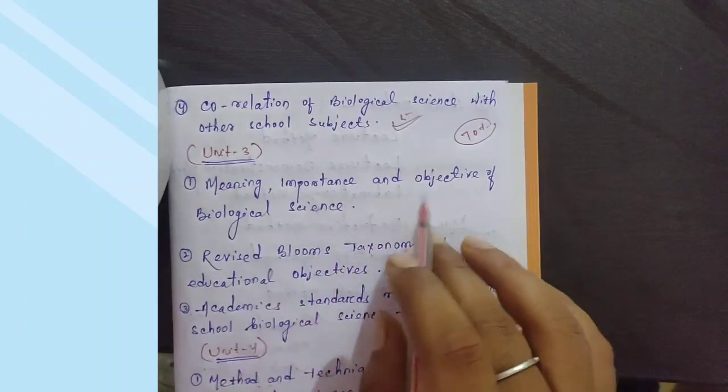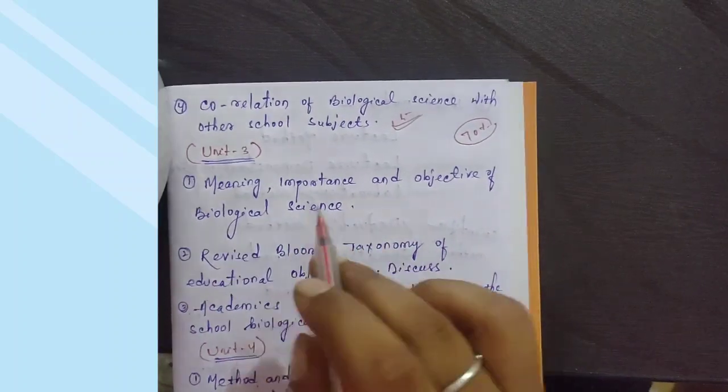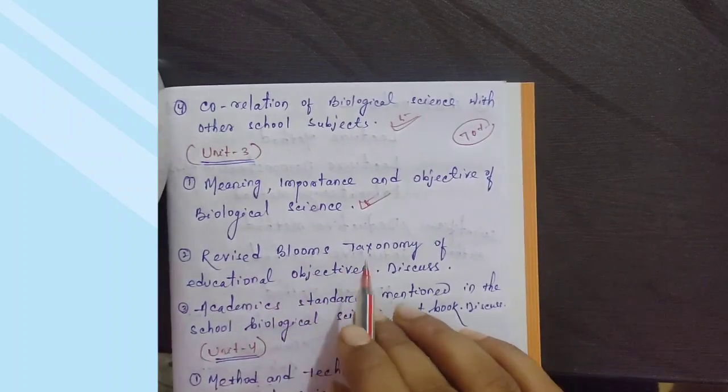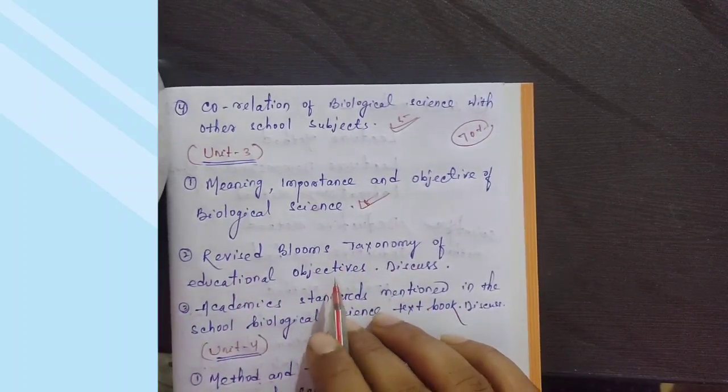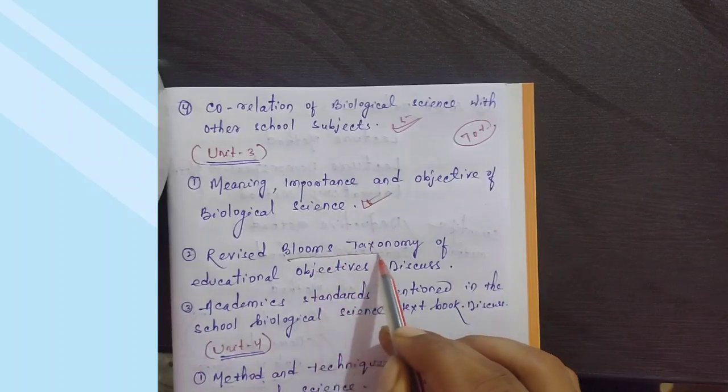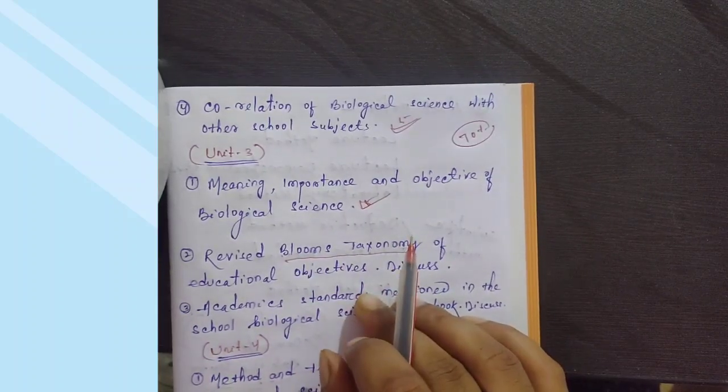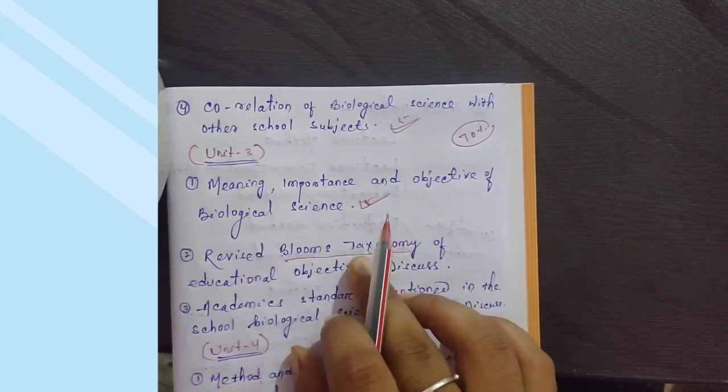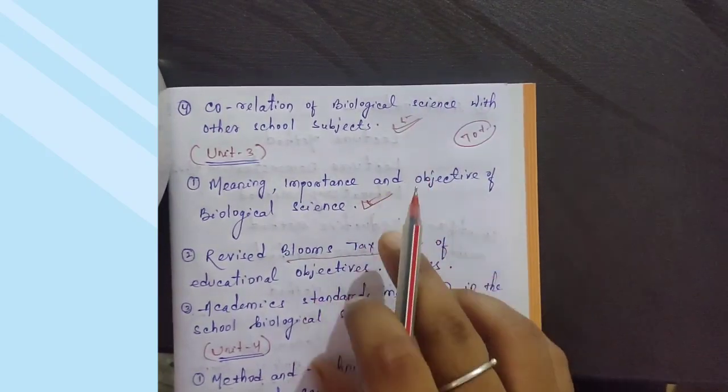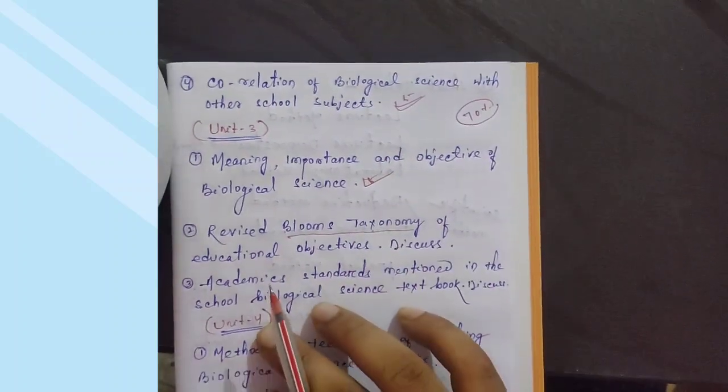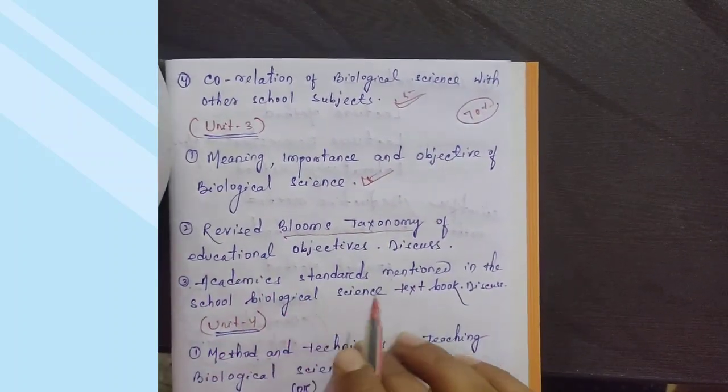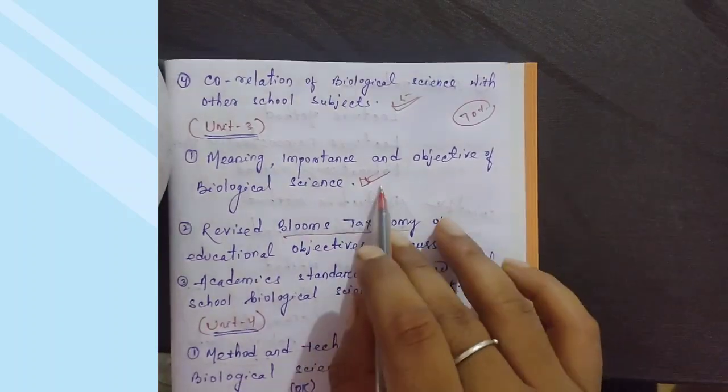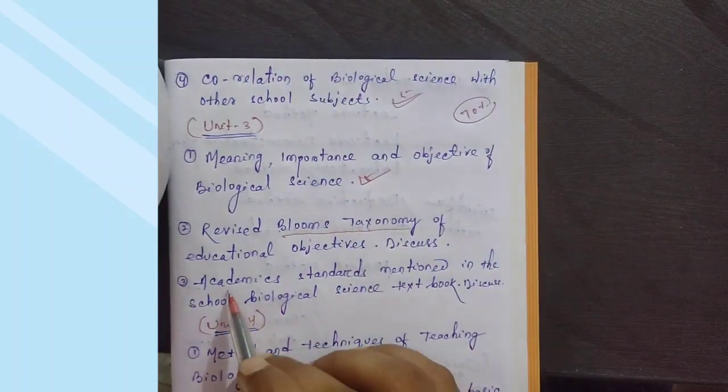Next unit: Meaning, importance, and objective of biological science - prepare this thoroughly. Revised Bloom's taxonomy of educational objectives - Bloom's taxonomy table, though it appears in exams, is not a very difficult question, so prepare it. Academic standards mentioned in school biological science textbooks - this is a very important question. I have already covered it in Unit 4.